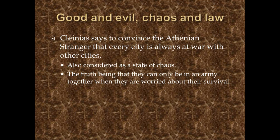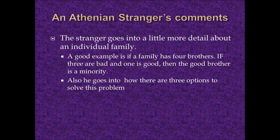Good and evil is an apparent theme in Plato's book of Laws. A good example is Cleinias trying to convince the stranger of a concept of endless chaos, saying that every city is at war with every other city. In this state of chaos, armies can only exist when one's welfare is threatened. The Athenian stranger continues with an example of an individual family: if a family has four brothers and three are bad, then there must be one good brother who is considered the minority.